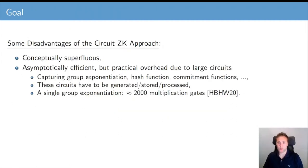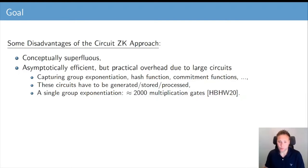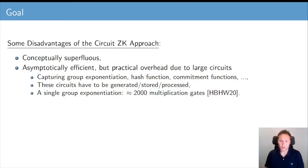However, there are some clear disadvantages of the circuit zero-knowledge approach. First, it is conceptually superfluous — the arithmetic circuits that result are quite complicated and tailored to a specific instantiation. For example, if we want to prove discrete logarithms in another group, then we would require another arithmetic circuit capturing the relation. Moreover, these large or complicated arithmetic circuits can cause practical overhead, and you also have to generate, store, and process all these large arithmetic circuits.